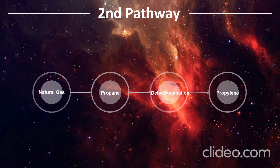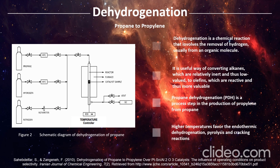Our second pathway: from natural gas, we produce propane, which undergoes dehydrogenation to produce propylene. Dehydrogenation is a chemical reaction involving the removal of hydrogen, usually from an organic molecule. It is a useful way of converting alkanes, which are relatively inert and low-valued, to olefins, which are reactive and more valuable. Propane dehydrogenation (PDH) is the process used in the production of propylene from propane. Higher temperatures favour the endothermic dehydrogenation, pyrolysis, and cracking reactions.